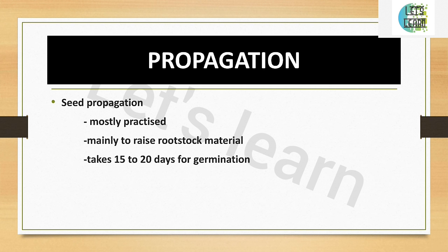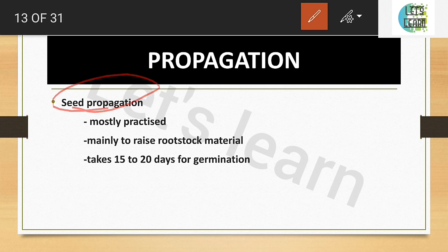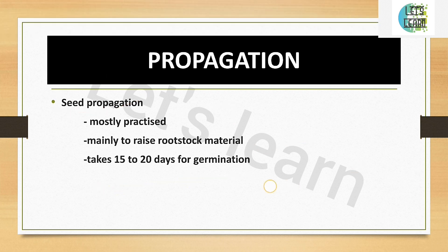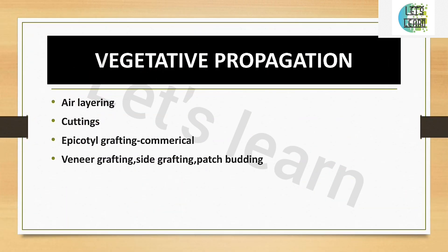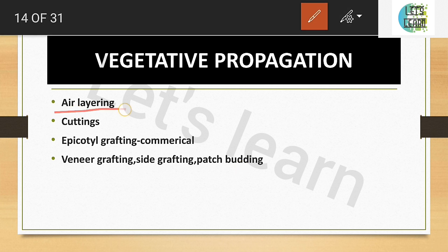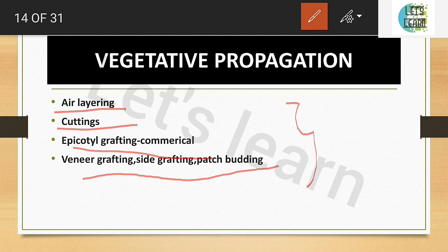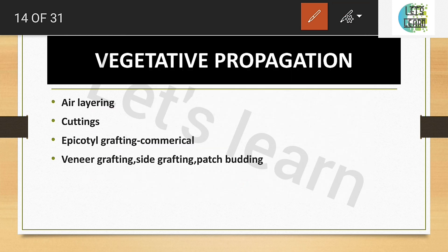For propagation of cashew, seed propagation is mainly practised to raise rootstock material, and it takes 15 to 20 days for germination. Vegetative propagation methods include air layering, cuttings, epicotyl grafting, side grafting, and patch budding. The commercially practised method is epicotyl grafting — this should be remembered as it will be asked in exams.